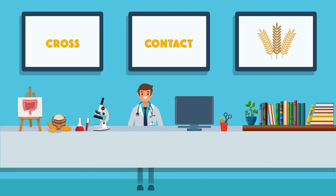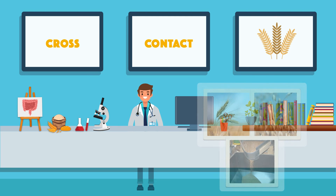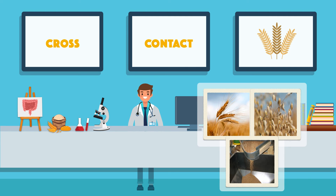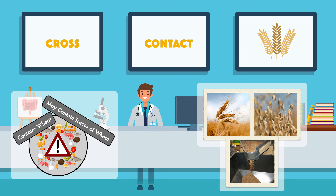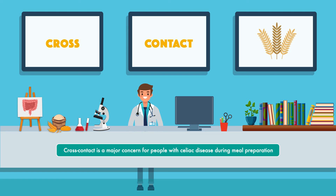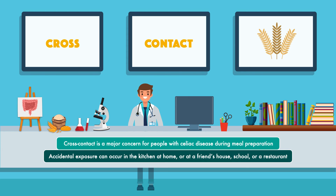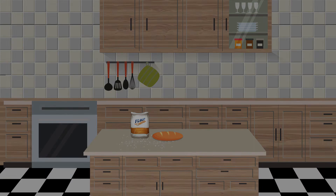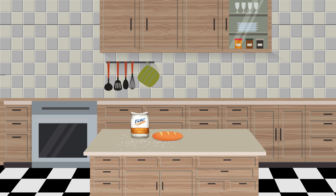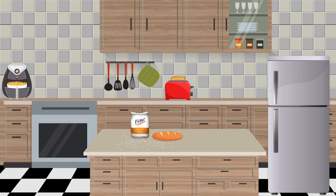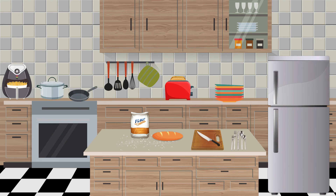The final piece of gluten-free living that we're going to cover is cross-contact. Cross-contact is a major concern for people with celiac disease during meal preparation. Accidental exposure can occur in the kitchen at home or at a friend's house, school, or a restaurant. Anywhere in the kitchen that gluten touches can leave traces behind. The toaster, fryer, and refrigerator are all potential points of exposure, as are cutting boards, pots and pans, plates, and utensils.